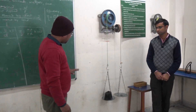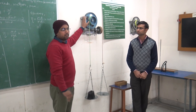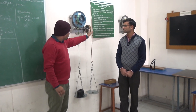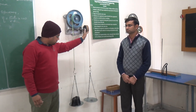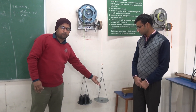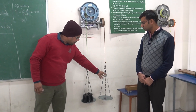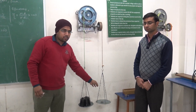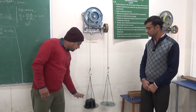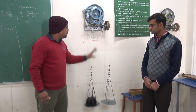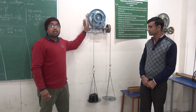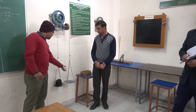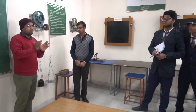First of all, we would like to understand the different parts of this apparatus. This is the effort pulley on which we are going to apply the effort for lifting the load. And this is the pan on which we are going to apply the weight. Whatever weight is applied is used as an effort for lifting the load. This device is basically a load lifting machine which is used for lifting loads of different capacities by the application of a small amount of effort.